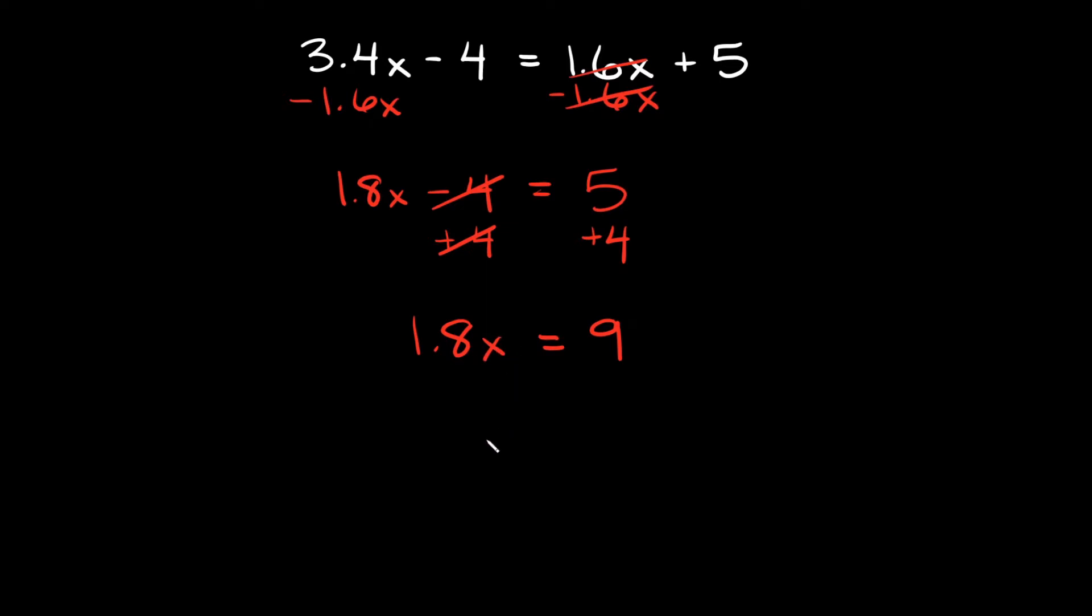So solving for x right here, since we're multiplying by 1.8, in order to get rid of it we're going to divide by 1.8. And what you do to one side you do to the other.